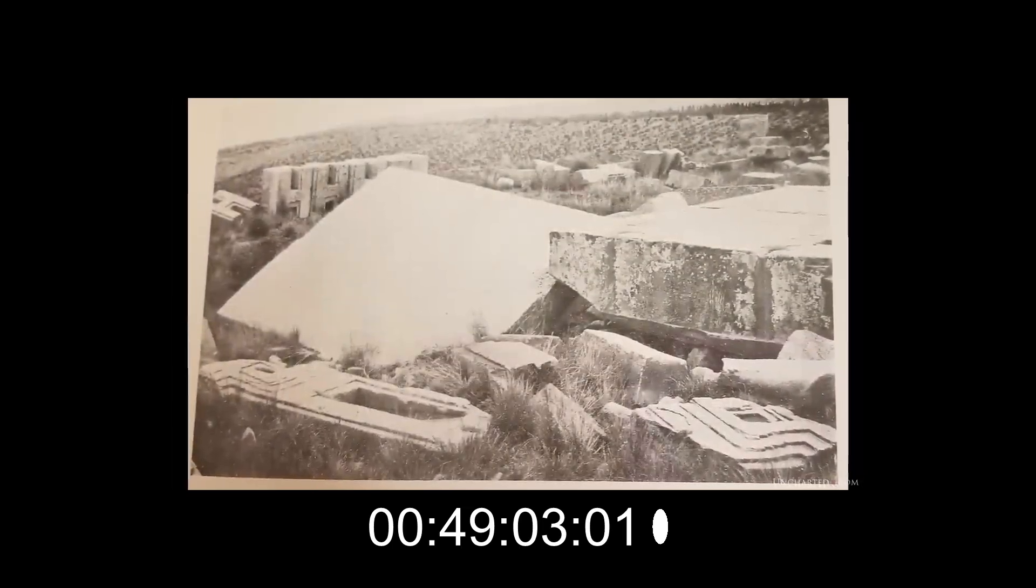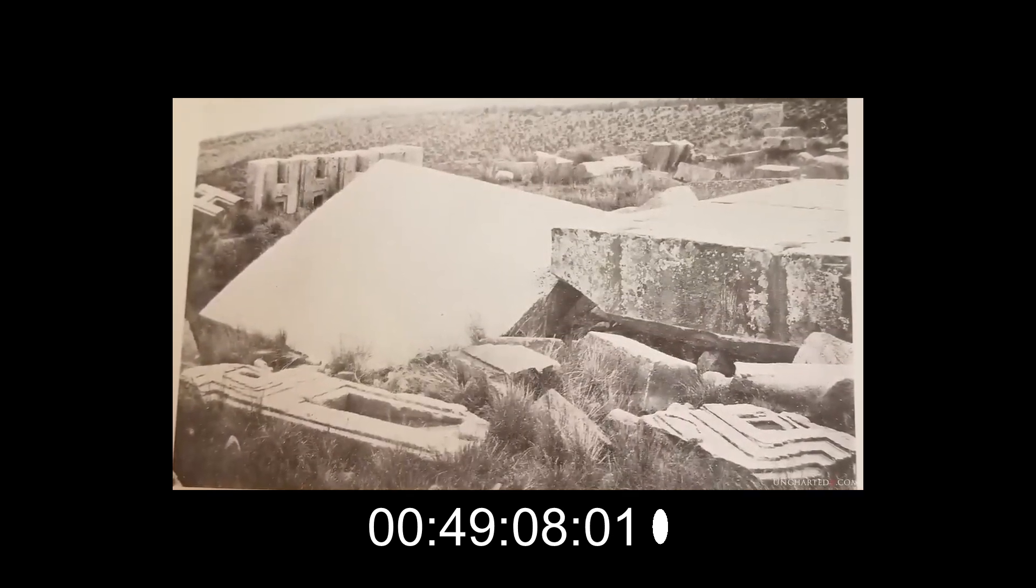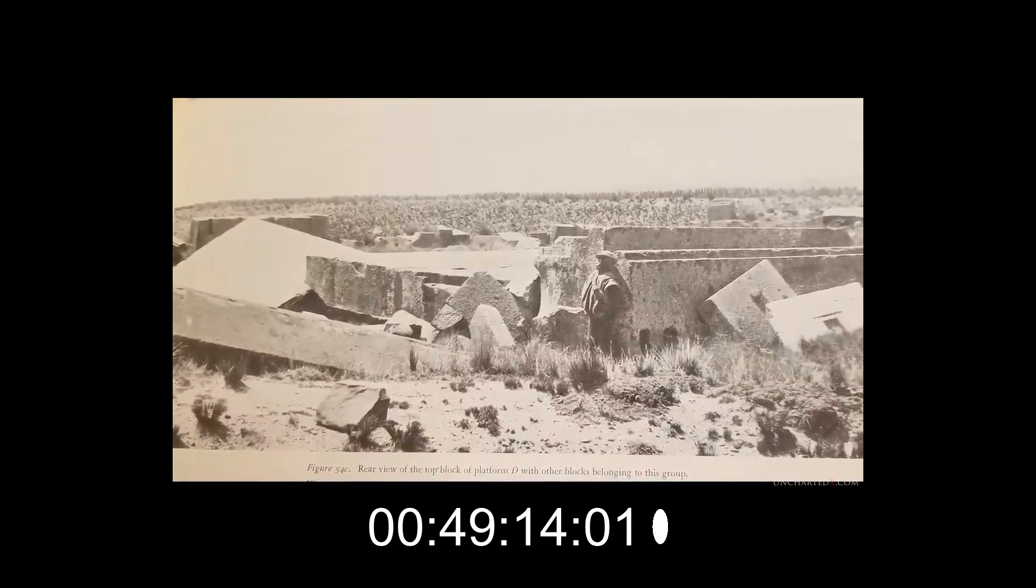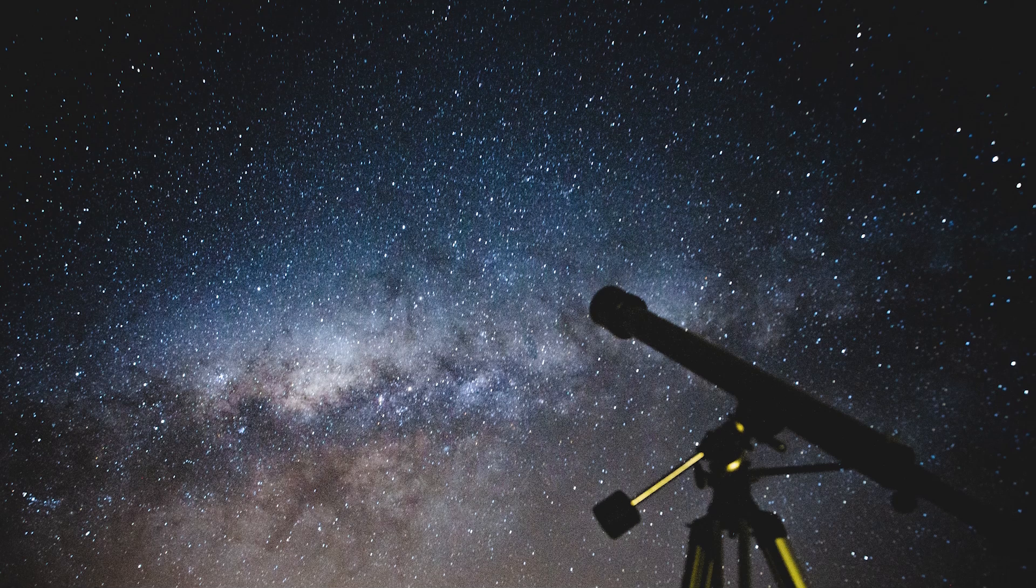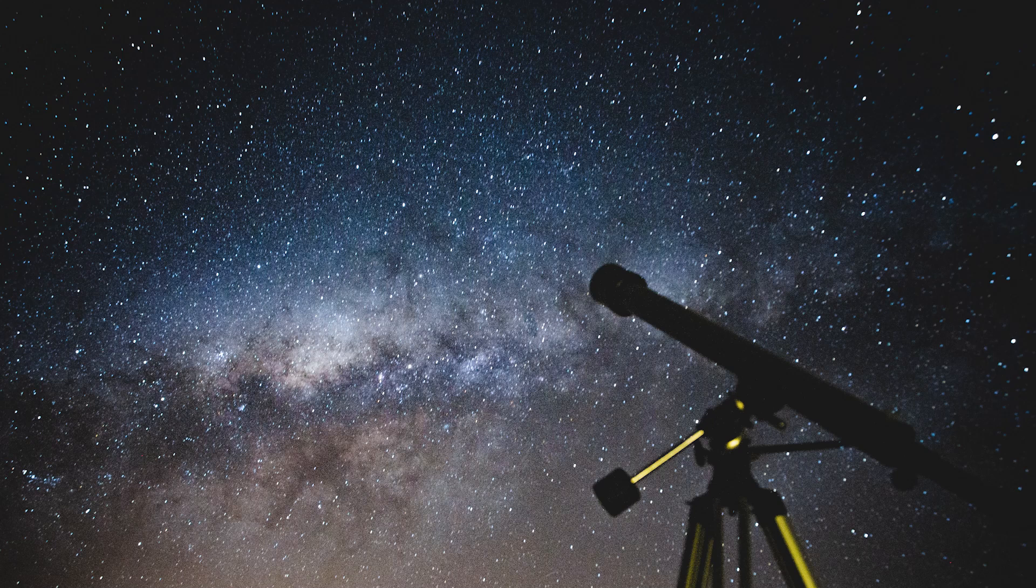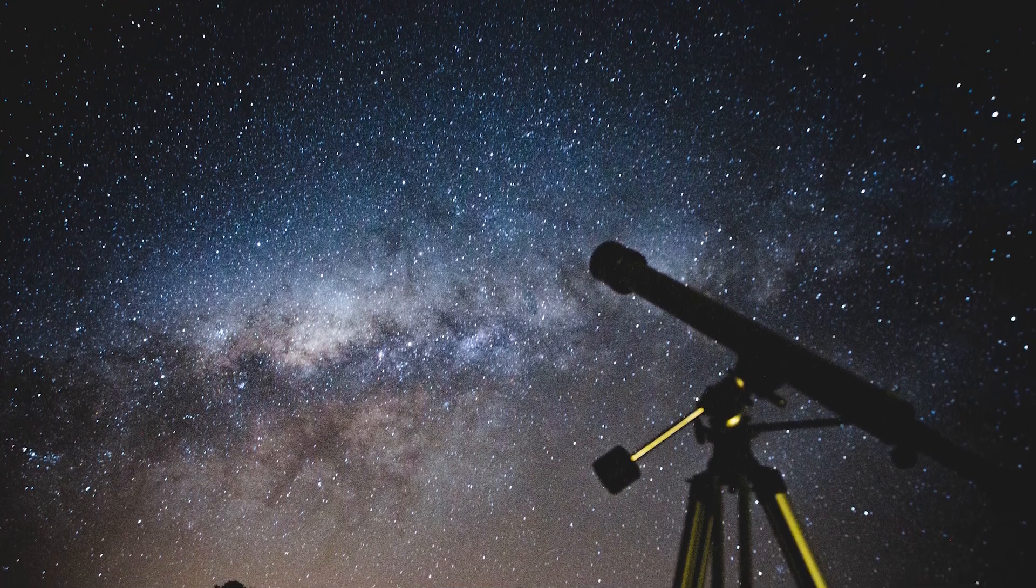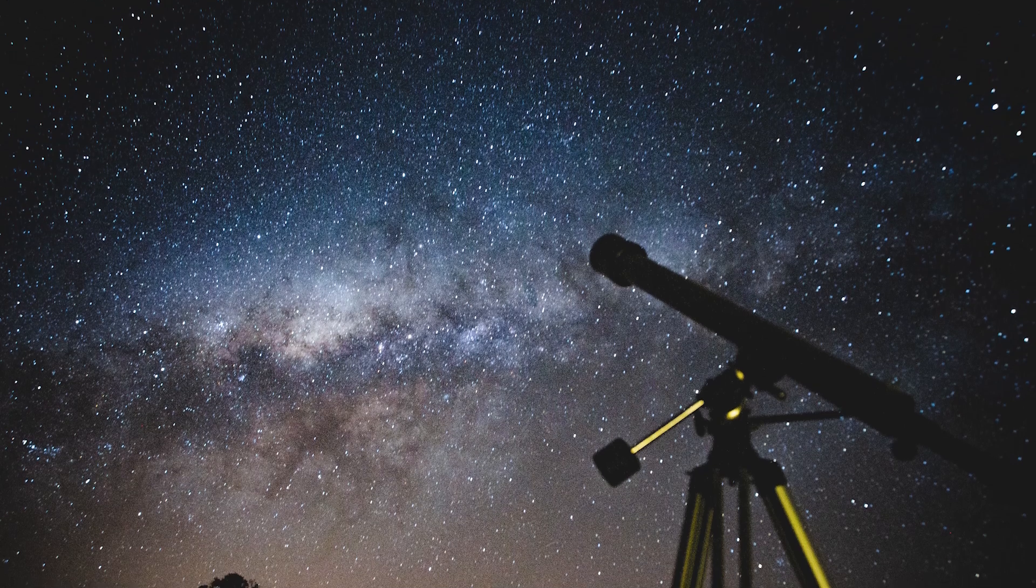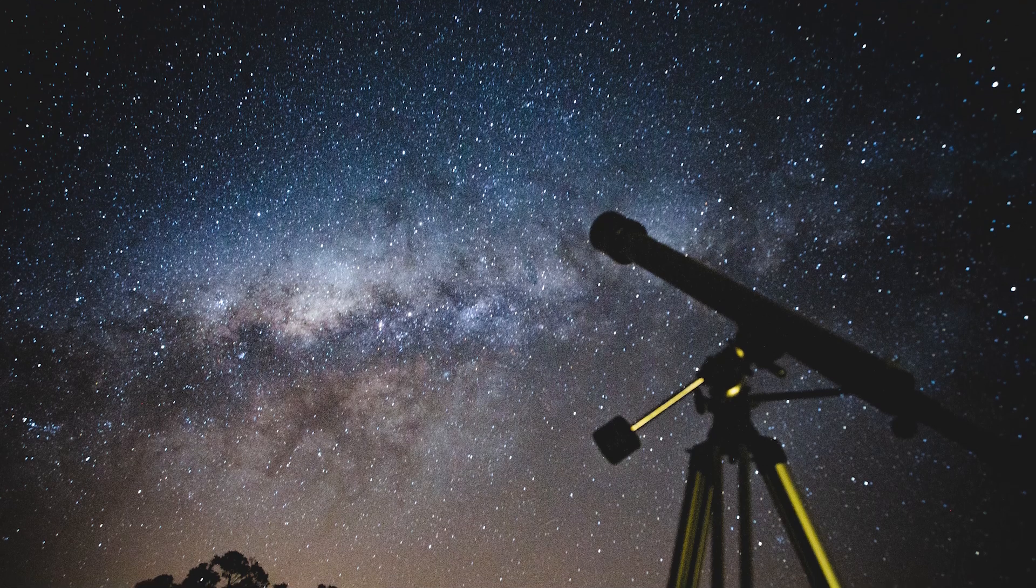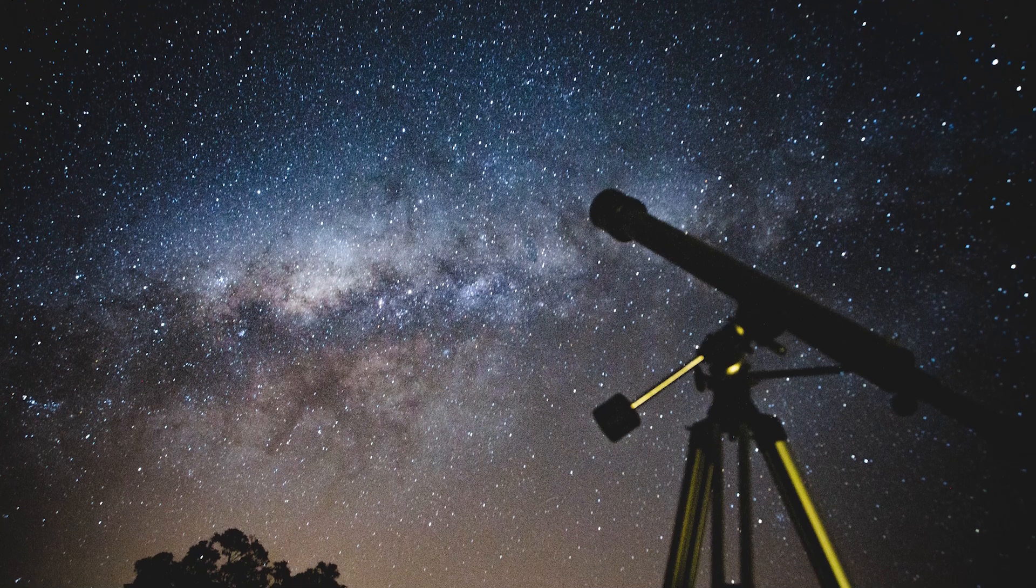Posnansky spent years on the site, carefully examining the alignment of the Kalasasaya, and also enlisted the help of several astronomers like Professor Rolf Muller from the German Astronomical Mission, who spent several years on site confirming his results. Yes, intrigued by Posnansky's findings, the German Astronomical Commission in 1926 sent an expedition to Peru and Bolivia. They certified that Posnansky's calculations were correct and that the alignment indicated a foundation date of either 15,000 or 9,300 BC, assuming the observational points were correct.